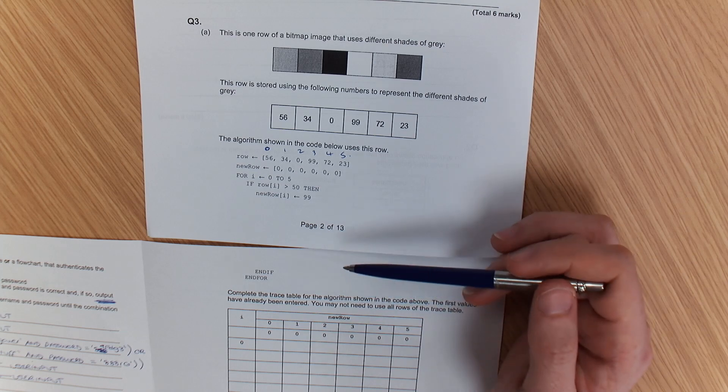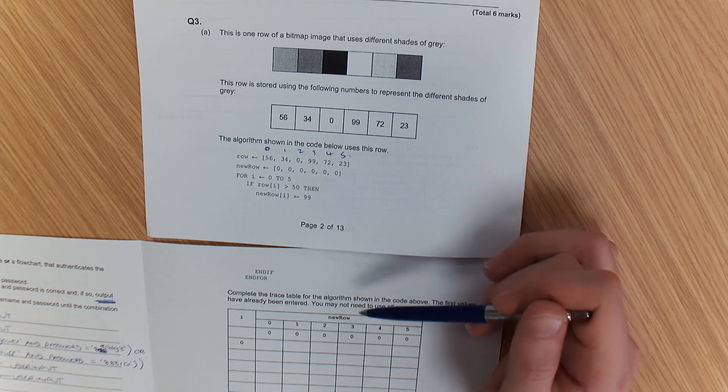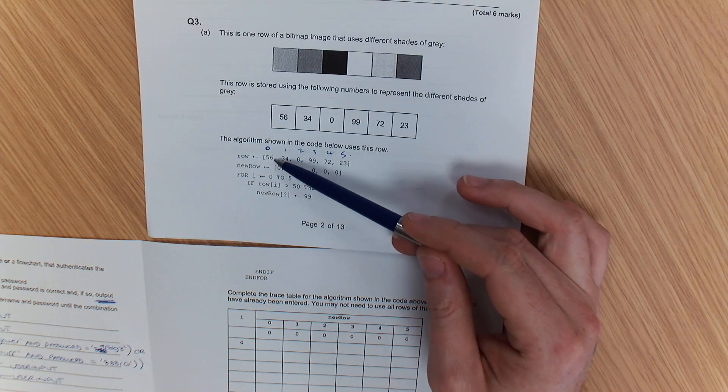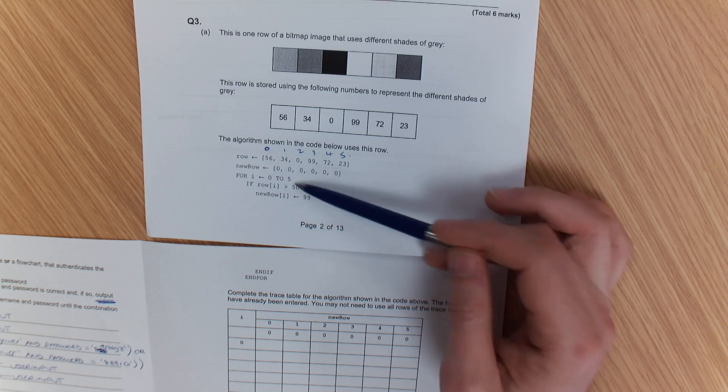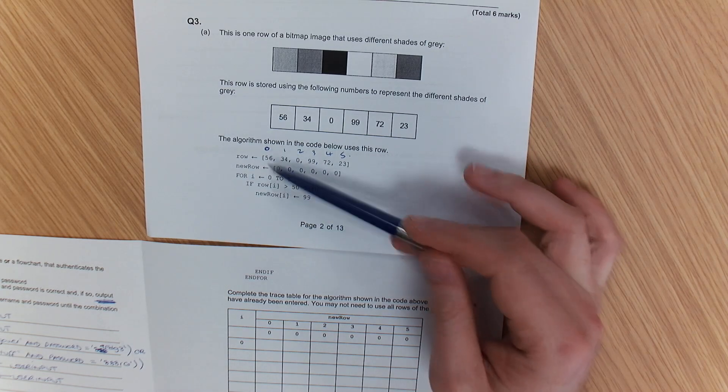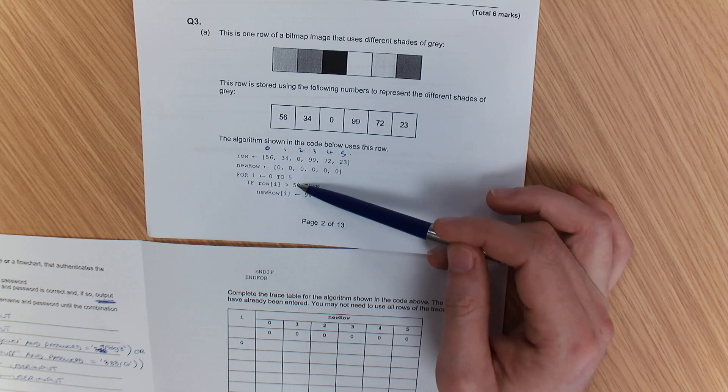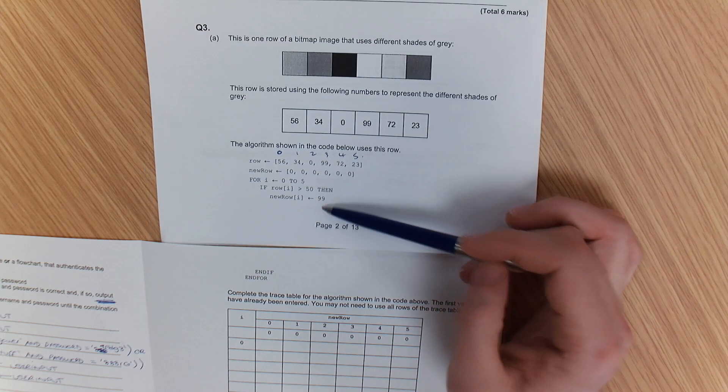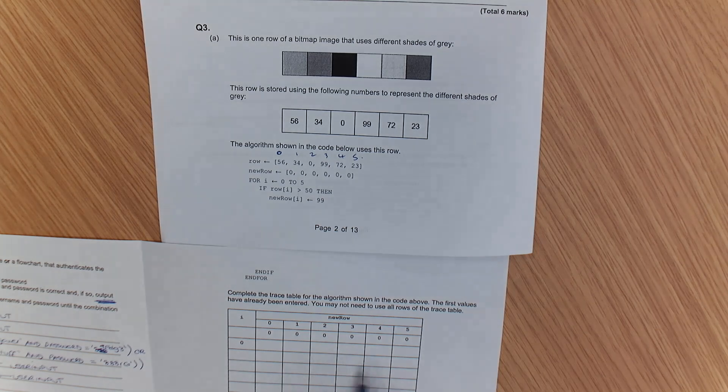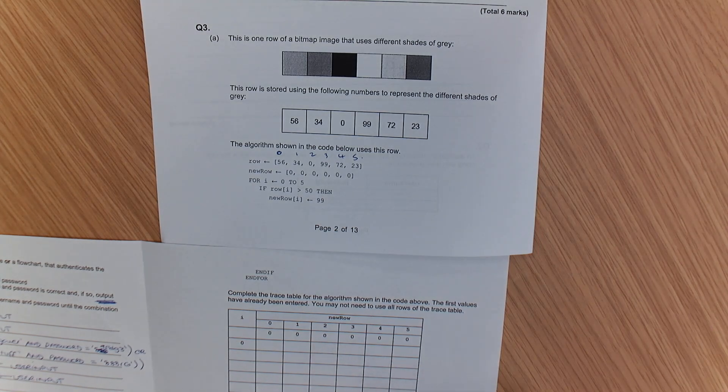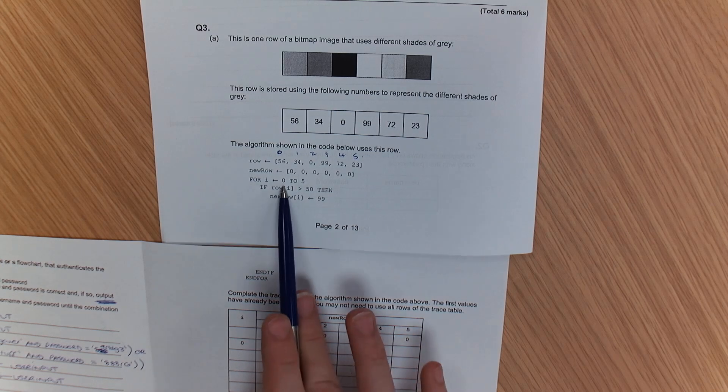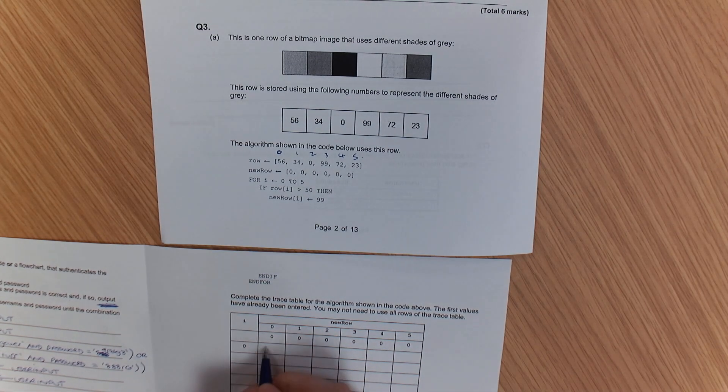So we're starting at 0. We're looking at the first number. Is the value in 0, row i is referring to that, higher than 50? So what is new row i going to be? Where am I going to write it on here? Under which number? 0, 0, 0. Yes, well done. It's going to be, because the value of i is 0 and we're on 0, so it's going to be 99.